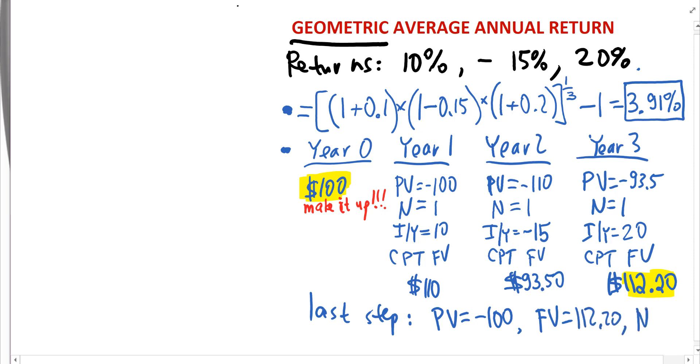Present value is 100 dollars from year zero. Then future value is the last price that we found, 112.20. They are three years apart and we want to compute the implied interest rate or growth that allows a 100 dollar price per share to gradually grow over the three years to 112.20. Compute IY.